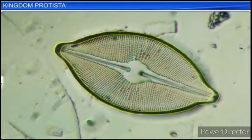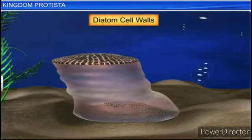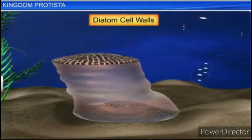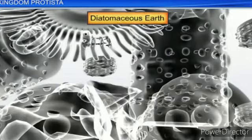In diatoms, the cell walls form two thin overlapping shells which fit together like a soap box — one base and a lid cover. The diatoms have this morphological structure, one fitting above the other. The walls are embedded with silica, making them indestructible. Diatoms have left behind large amounts of cell wall deposits in their habitat, and this accumulation over billions of years is referred to as diatomaceous earth.